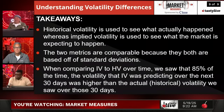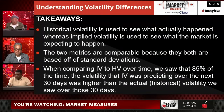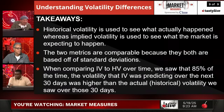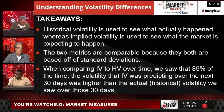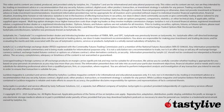Historical volatility is used to see what actually happened, whereas implied volatility is used to see what the market is expecting to happen. The two metrics are comparable because they are both based on standard deviations. When comparing IV to HV over time, we saw that 85% of the time the volatility IV was predicting over the next 30 days was higher than the actual historical volatility over those 30 days. It's important to understand historical volatility to give you the idea of how your returns are going according to the past 30 days.